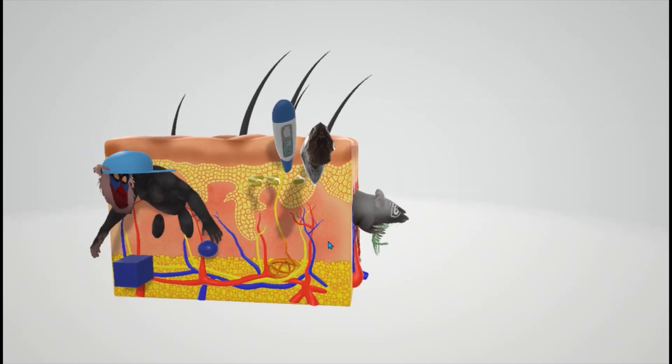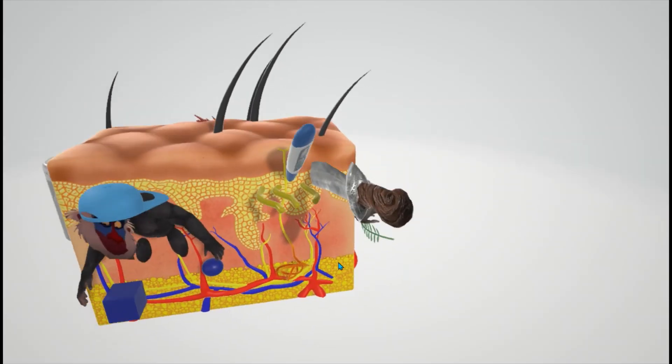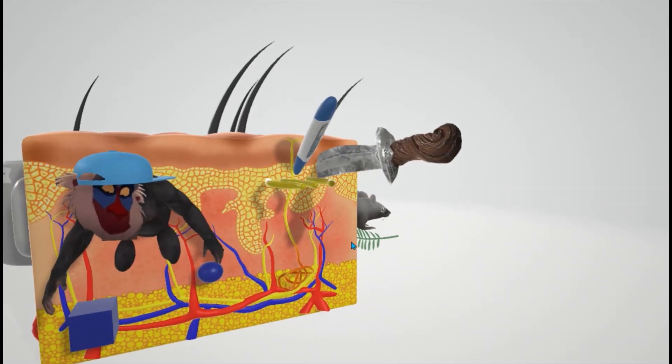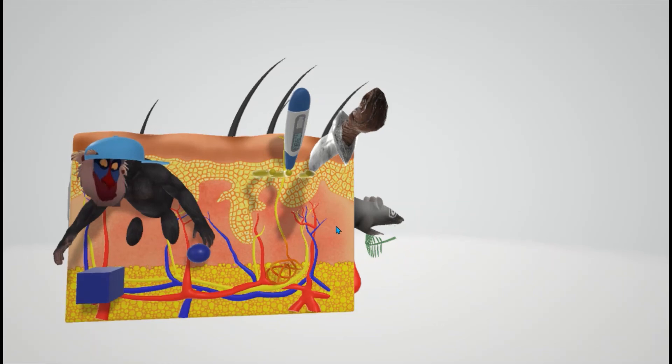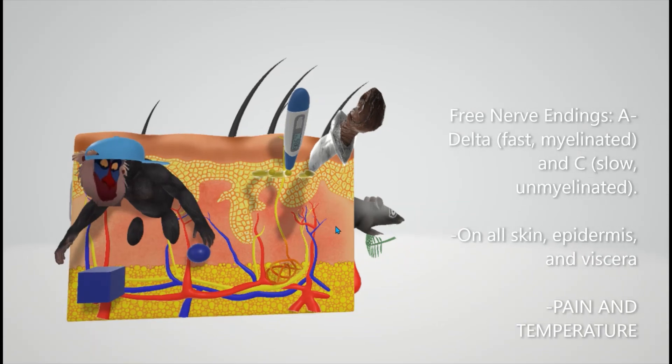Finally, we have over here the free nerve endings. We have these free nerve endings up on top by the superficial skin. We see a thermometer and a knife in it. The thermometer helps us remember temperature, and the knife for pain, because free nerve endings sense pain and temperature.